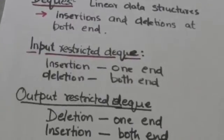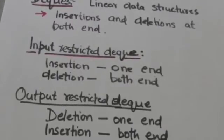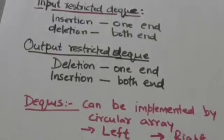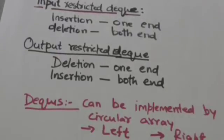A dequeue in which insertions are allowed at only one end but deletions are allowed at both ends is called an input-restricted dequeue. A dequeue in which deletions are allowed at only one end but insertions are allowed at both ends is called an output-restricted dequeue.